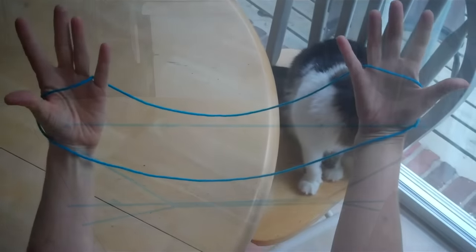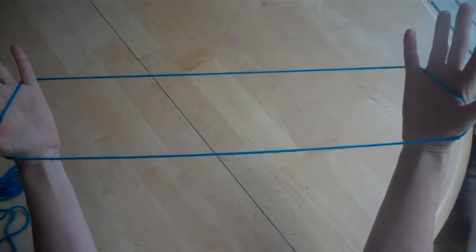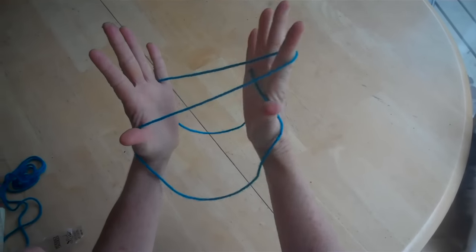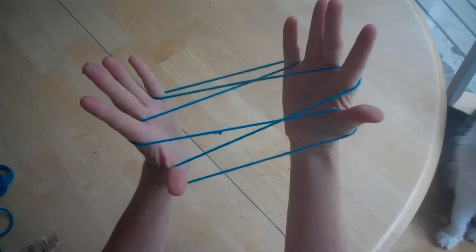You're going to start with your basic loop over your pinky and thumb and you're going to pick up each palm string with your pointer. Some people use their middle finger.